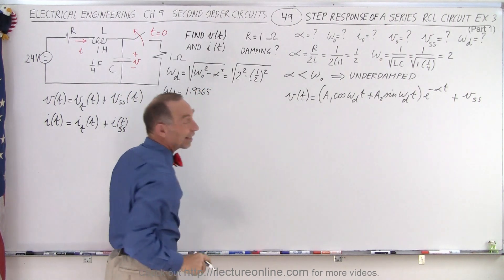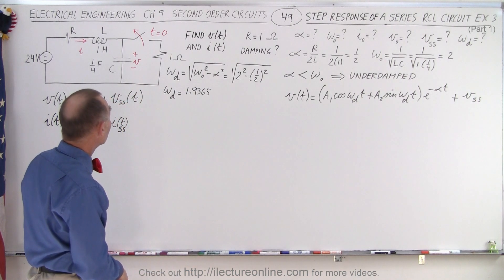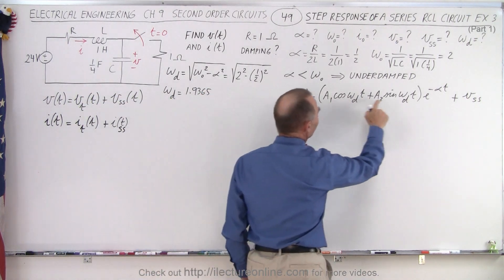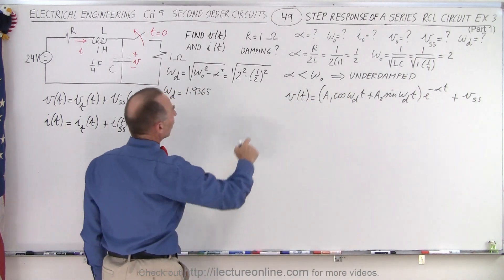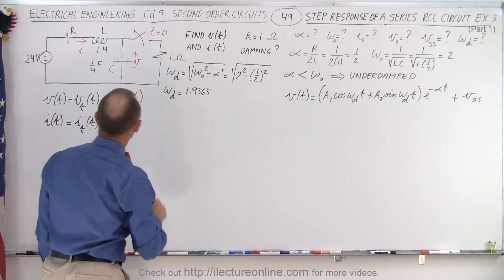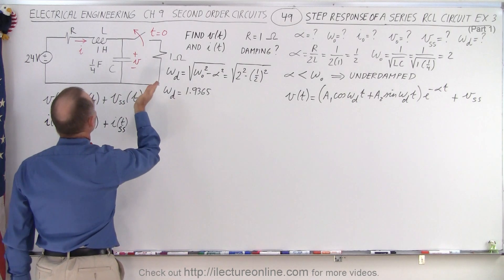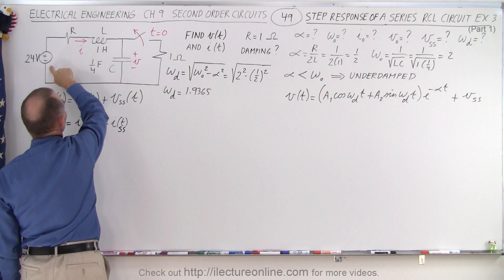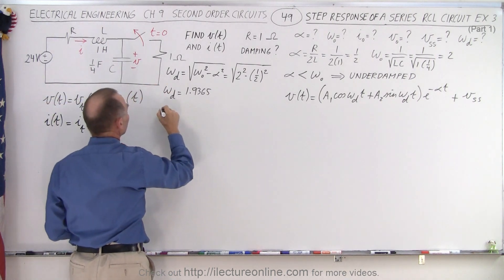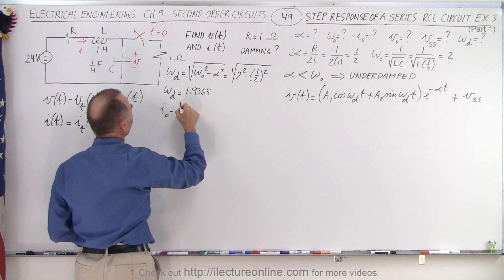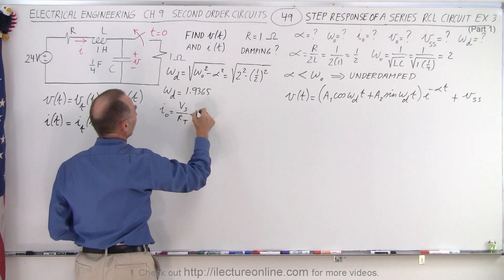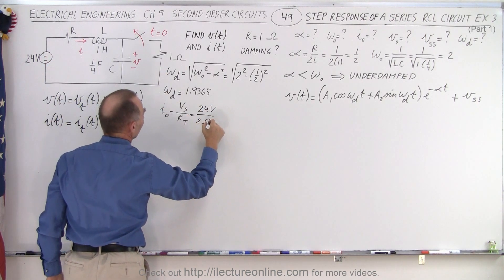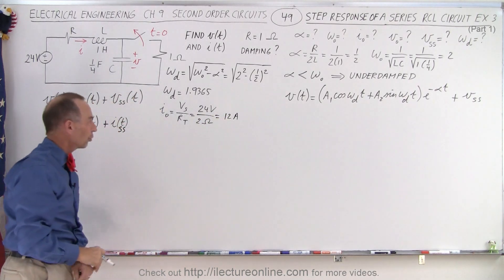Now we have the damped frequency and alpha. What about the initial current and initial voltage? When the switch is closed, the circuit is complete with the voltage source and total resistance. So the initial current is V over R: that's the source voltage divided by the total resistance, which is 24 volts divided by 1 ohm plus 1 ohm equals 2 ohms, giving us 12 amps for the initial current.